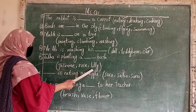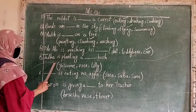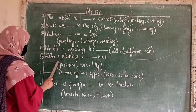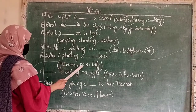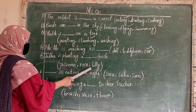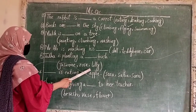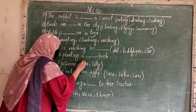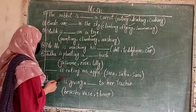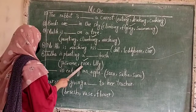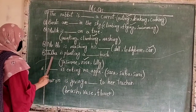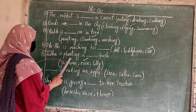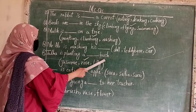We have a flower — is it rose, jasmine, or lily? The correct option is rose. We click on our sentence and it is complete: it is planting a rose bush.